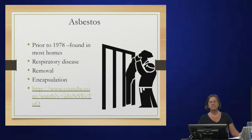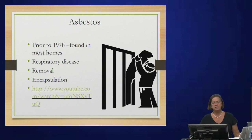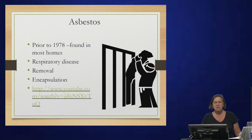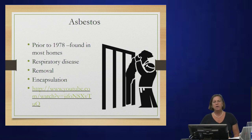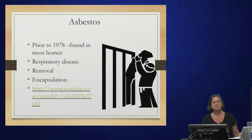Let's begin with asbestos. Asbestos was used in building materials — it's fire retardant, and prior to 1978, almost all buildings had some sort of asbestos. Asbestos may be found in ceiling tiles, siding, and insulation. The problem with asbestos is that it's highly friable — in other words, it breaks down over time. And if you breathe it in, it can cause or exacerbate respiratory diseases. For instance, if you've seen ads for mesothelioma, mesothelioma is largely caused by exposure to asbestos.